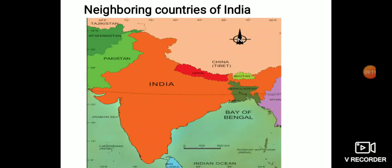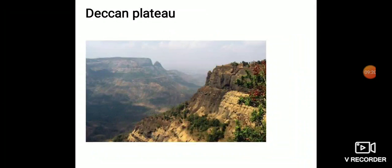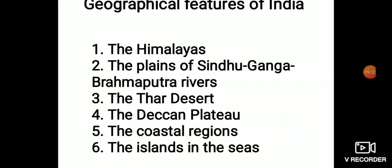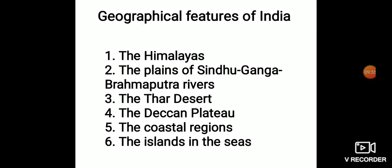The following geographical regions are important when we look at the course of Indian history: first, the Himalayas; second, the plains of Sindhu, Ganga, and Brahmaputra rivers; third, the Thar Desert located in Rajasthan; fourth, the Deccan Plateau, which lies in Maharashtra; fifth, the coastal regions — the sea coasts; sixth, the islands in the seas like Andaman, Nicobar, and Lakshadweep, which are separated from our mainland.